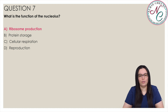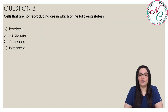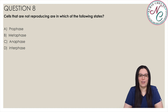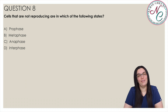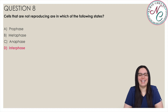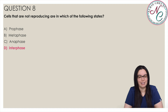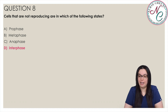Cells that are not reproducing are in which of the following states? Is it A, prophase; B, metaphase; C, anaphase; or D, interphase? The correct answer is D, interphase. Interphase is the name of the state the cells occupy when they are performing normal metabolic functions. DNA may be replicating in preparation for cell reproduction, but the cell is not undergoing either mitosis or meiosis.